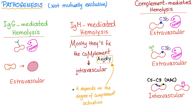Now for pathogenesis, there are three processes: IgG-mediated, IgM-mediated, or complement-mediated hemolysis. In IgG-mediated hemolysis, the red blood cell is covered with IgG, and a splenic macrophage comes to consume it. As the macrophage eats the edges of the biconcave cell, it converts it to a spherocyte. This is extravascular hemolysis, since we are talking about splenic macrophages.